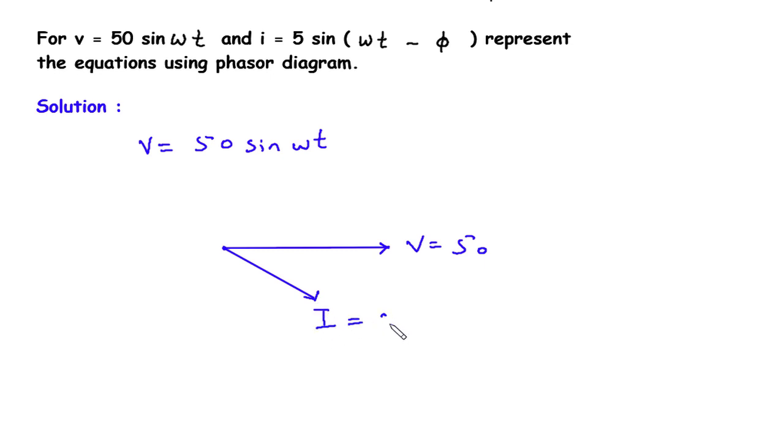So I equals 5 ampere and here this will be 50 volts and the angle will be 5 degrees. This is the phasor diagram.